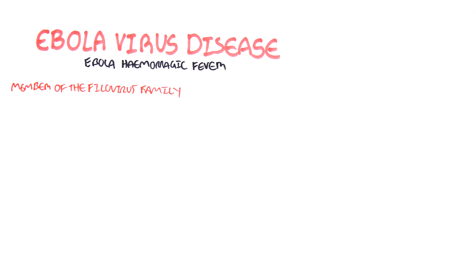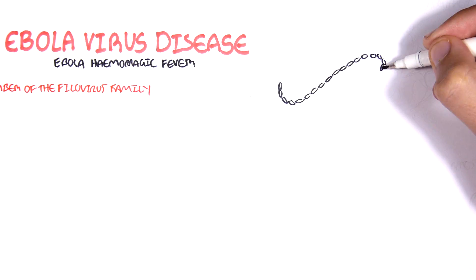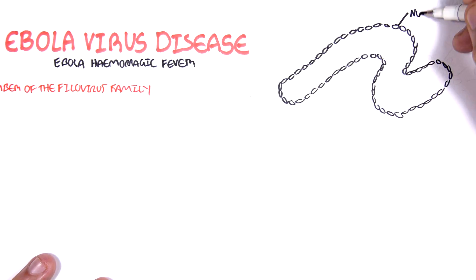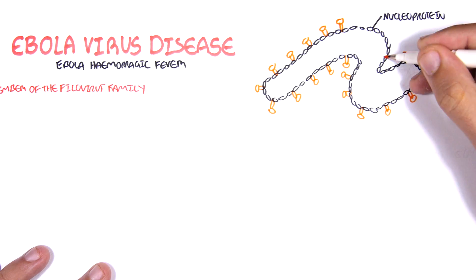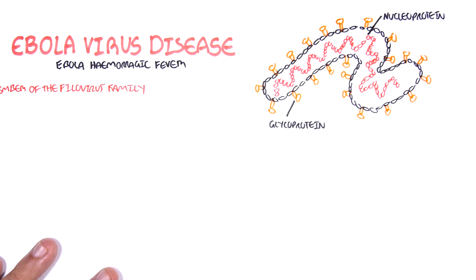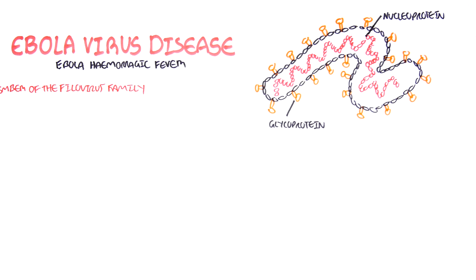If we look at the Ebola structure, it has a cell membrane and nuclear proteins inside itself and an outer glycoprotein. The genetic material, which is RNA, is within the nuclear protein.